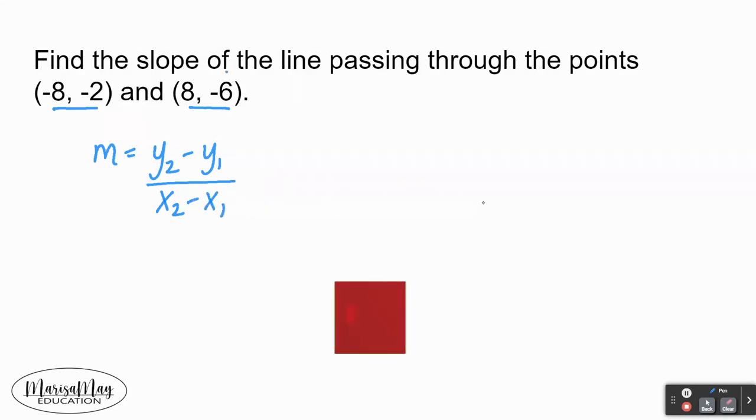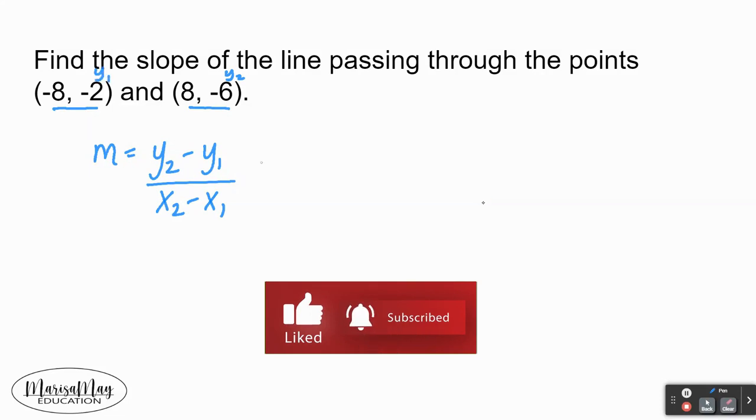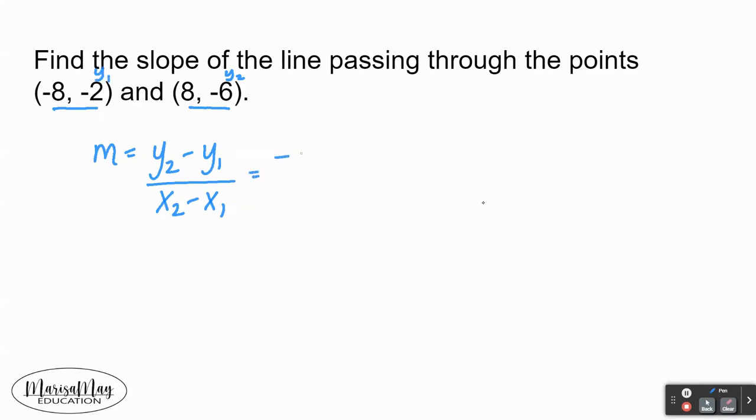The y2 here is our second y coordinate and y1 is our first y coordinate. So our second y coordinate is -6, our first y coordinate is -2, so watch how I wrote that: minus negative 2. Our x2 is our second x coordinate, that's 8, and our x1 is our first x coordinate, that's -8. Again, watch those signs here.